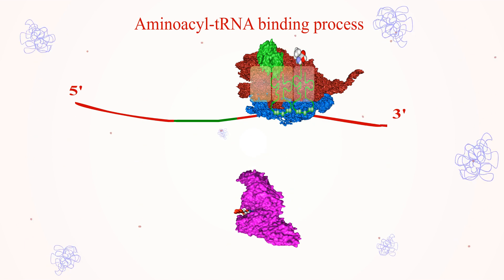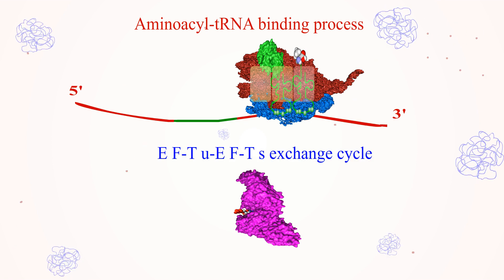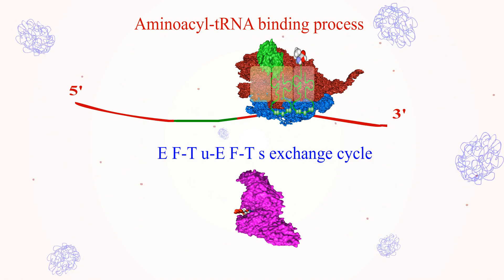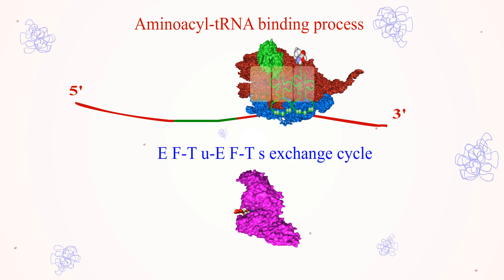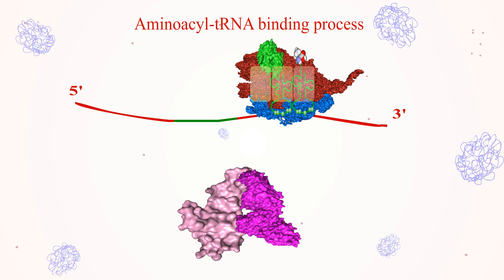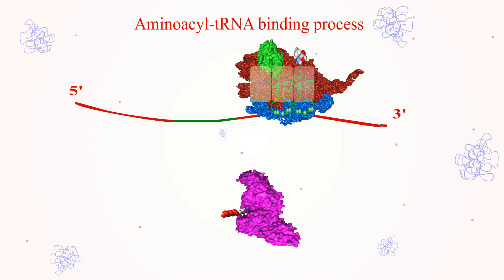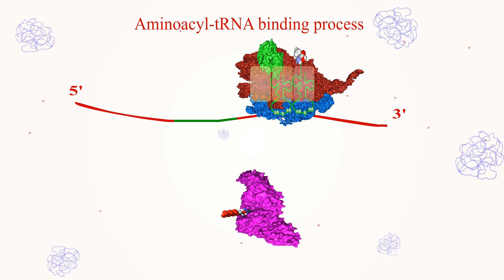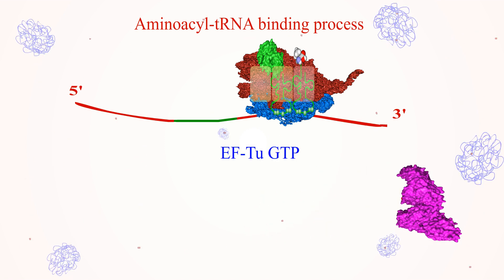The EF-Tu is regenerated in a process named EF-Tu-EF-Ts exchange cycle, with the help of elongation factor EF-Ts. This regeneration process is carried out by displacing the GDP from EF-Tu by EF-Tu-EF-Ts. Then GTP binds to EF-Tu and displaces EF-Tu-EF-Ts, forming EF-Tu-GTP.